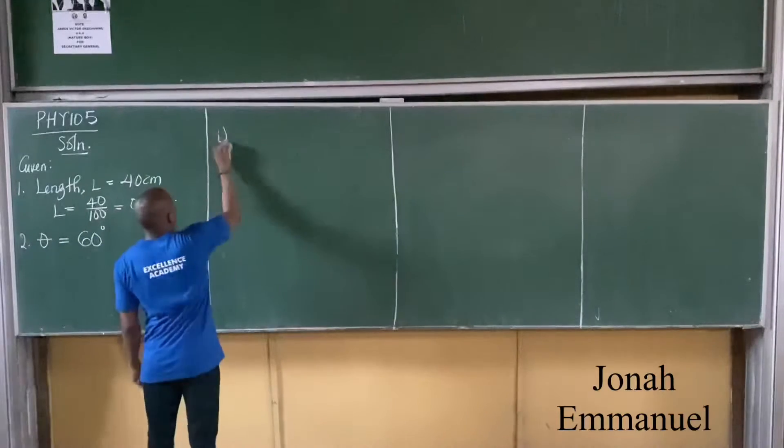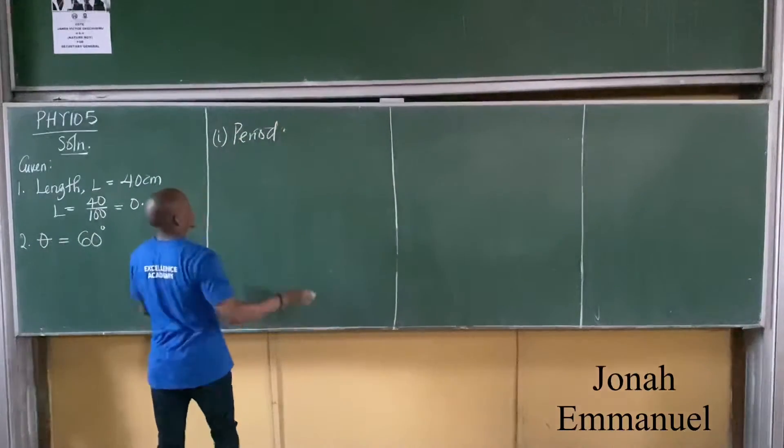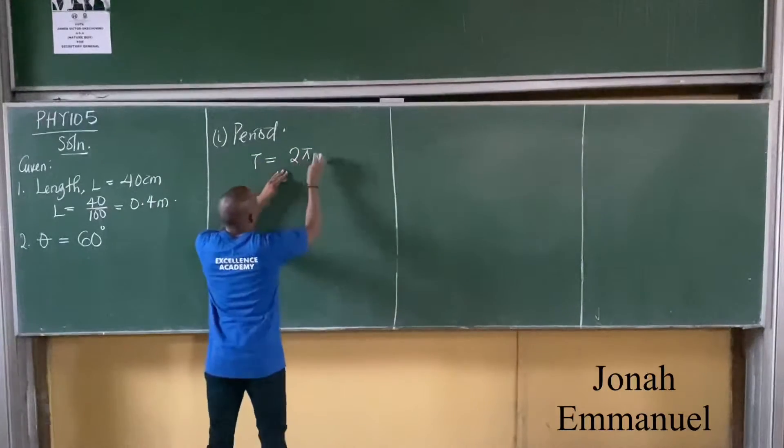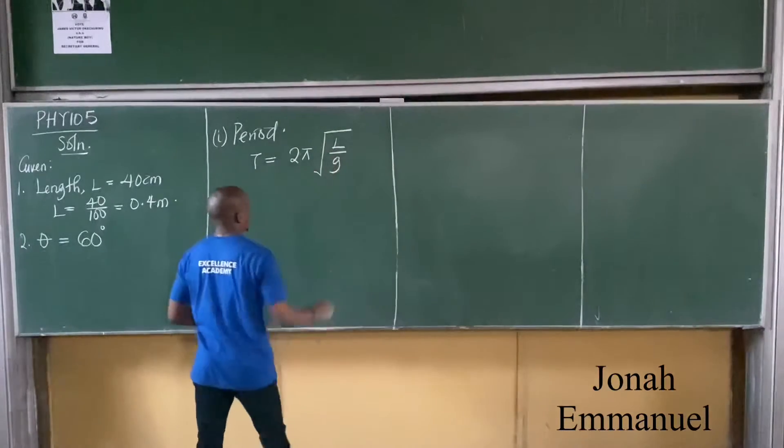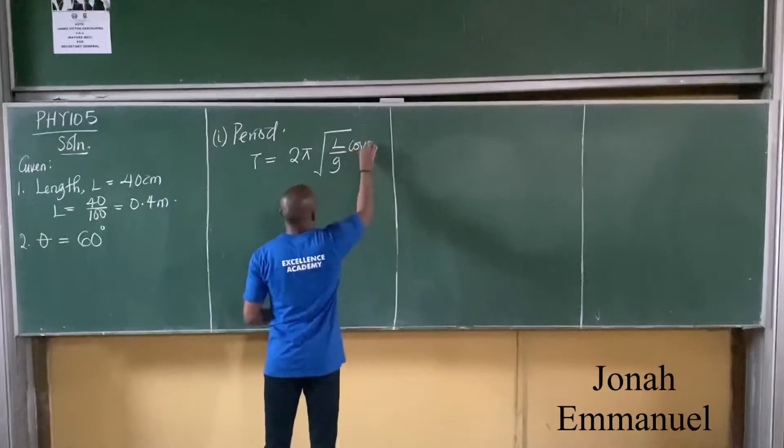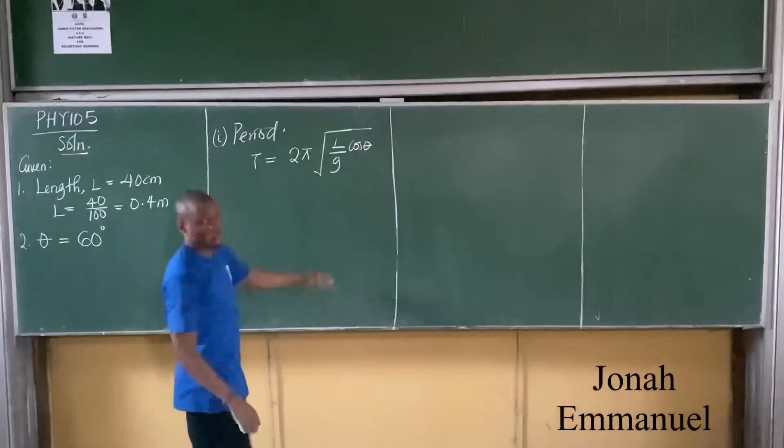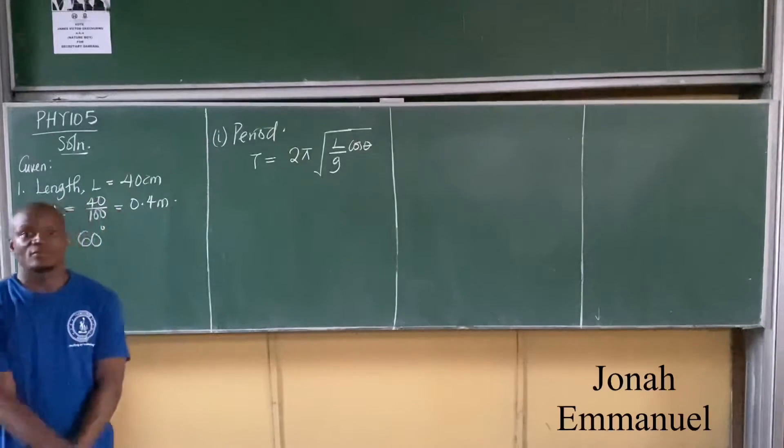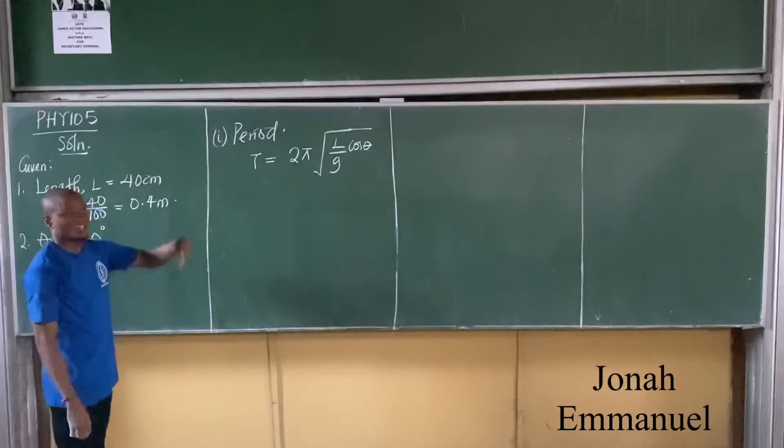What is the period? Let's take the first part, the period. Recall your formula. Recall T is equal to 2π square root of L over G. What again? Cos theta. If there is no angle given, just use cos theta.